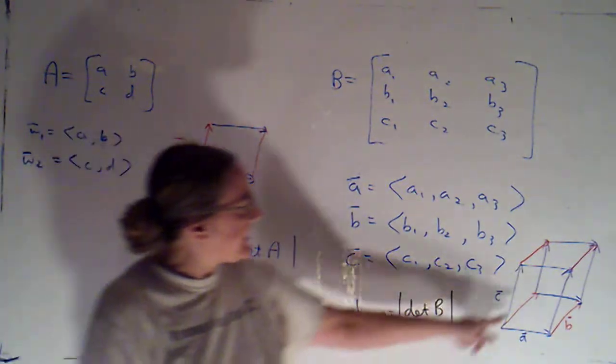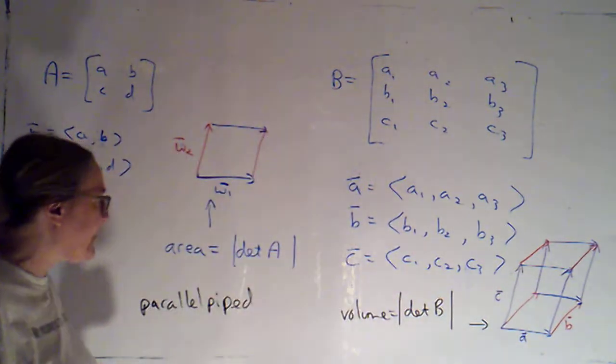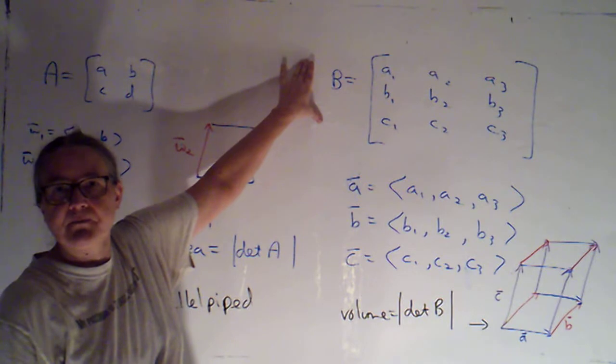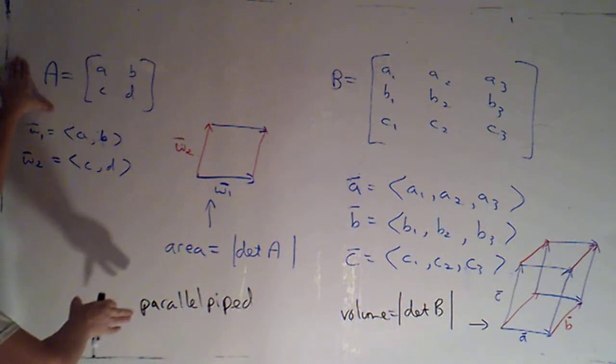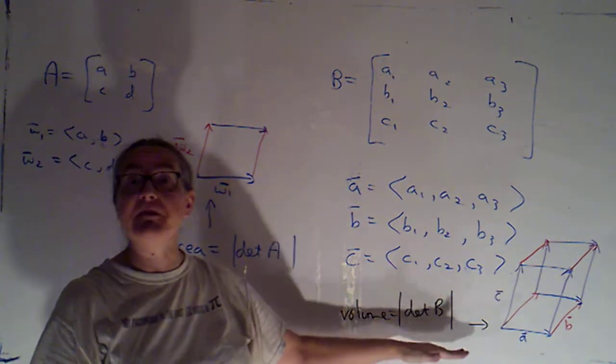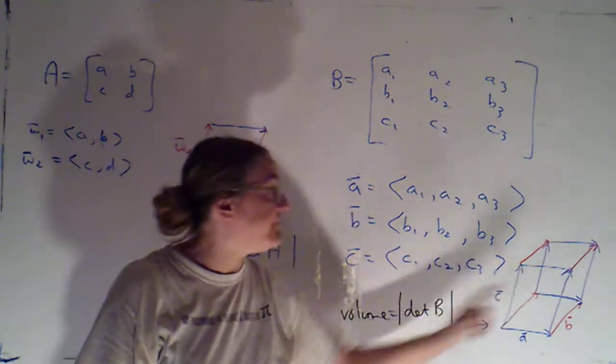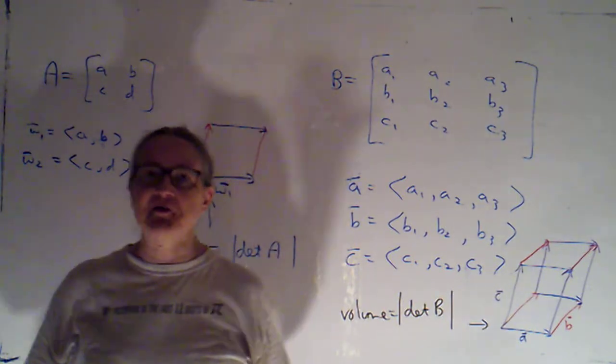Alright, if I calculate the volume of that parallelepiped, it turns out that's going to be the absolute value of the determinant of this matrix. Now, I've just asserted this fact without proof, and I'm going to leave it at that. We're not going to prove this one. We will be able to, in a little bit, prove this fact.